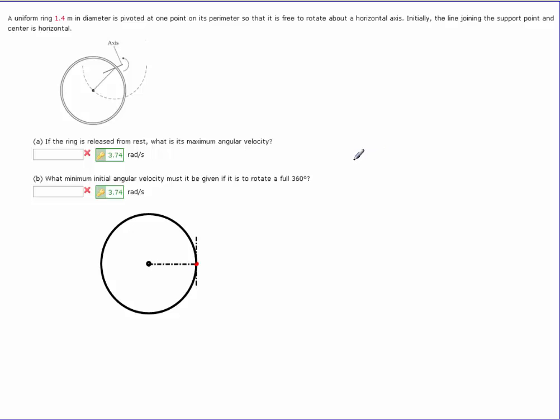This is Dr. Holt. This is one of the web-assigned problems. You have a uniform ring here of 1.4 meters in diameter, pivoted at one point on its perimeter so that it is free to rotate about a horizontal axis. Initially, the line joining the support point and the center is horizontal. So what I have here, I've moved it into the position. I have a ring mounted so it can rotate about this point here. Basically, we're going to hold it and then let it go.